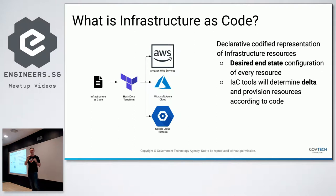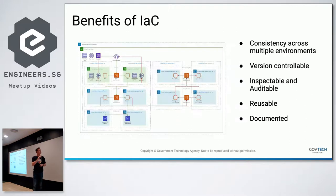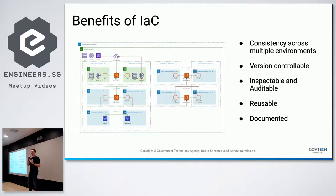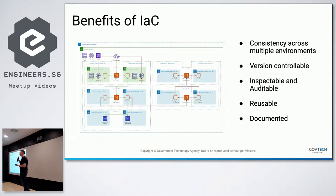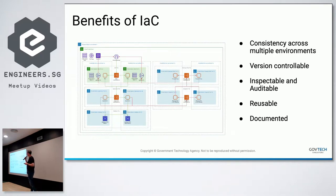These sorts of tools describe the desired end state that we're looking at, and really let us understand the changes going into the cloud — the delta of what's going to be changed and updated. The benefits of IAC include consistency across multiple environments, version control stored in Git, and being inspectable and auditable. As a government body, we have strong requirements for security policy, so having things visible, documented, and stored safely is critical.